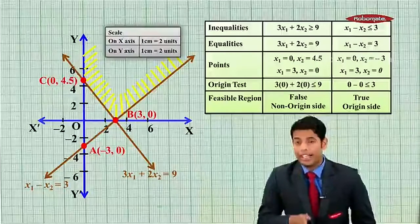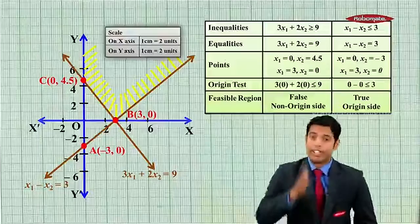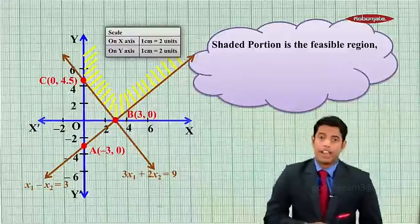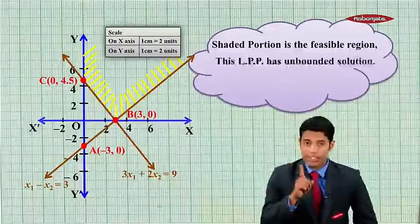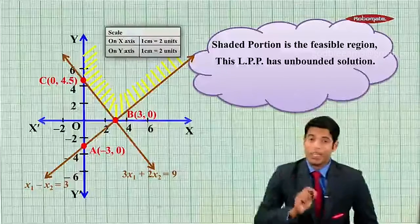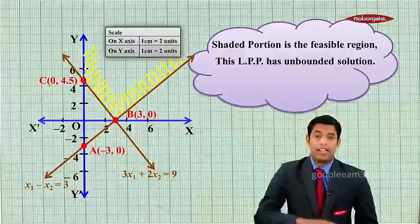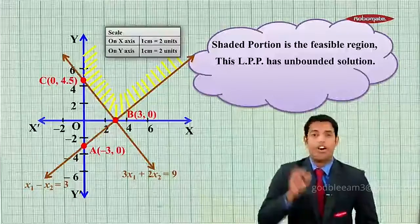So obviously for this question we can see that shaded portion is the feasible region and this LPP has an unbounded solution. What is unbounded? That is, there is no restriction on maximum value of z.